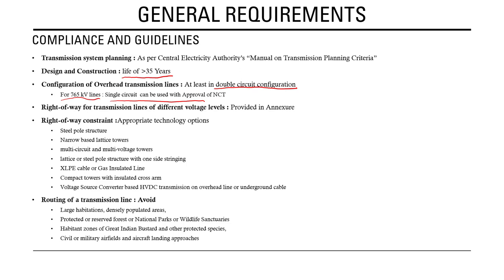Right-of-way for transmission lines at different voltage levels has been provided in an annexure, covering ground clearances, conductor clearances, and clearances for different tower types and terrains. Where right-of-way constraints are faced during construction, appropriate technological options must be explored, including steel pole structures, narrow base lattice tower structures, and multi-circuit and multi-voltage circuit towers.